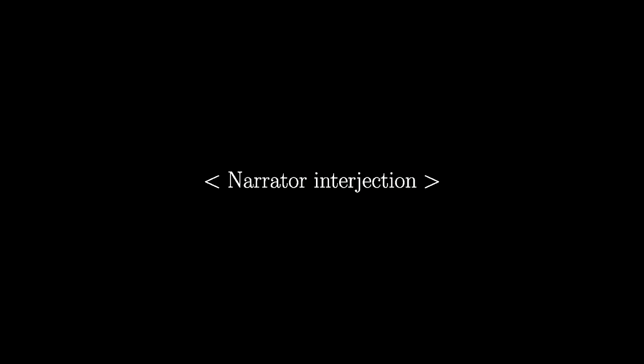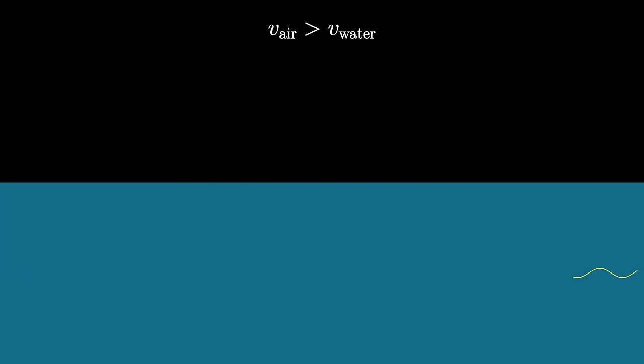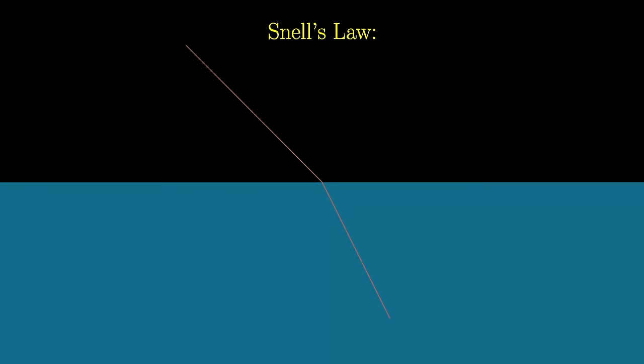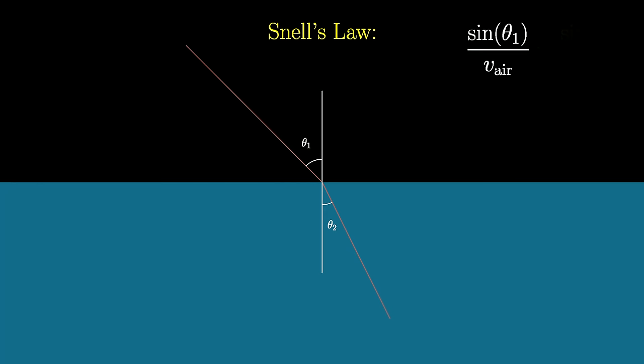At this point in the conversation, we talked for a while about Snell's Law — a result in physics describing how light bends when it goes from one material into another where its speed changes. All you need to know is the statement of Snell's Law itself: when a beam of light passes from one medium into another, the sine of the angle it makes with a line perpendicular to the boundary between those two materials, divided by the speed of light, stays constant as you move from one medium to the next.